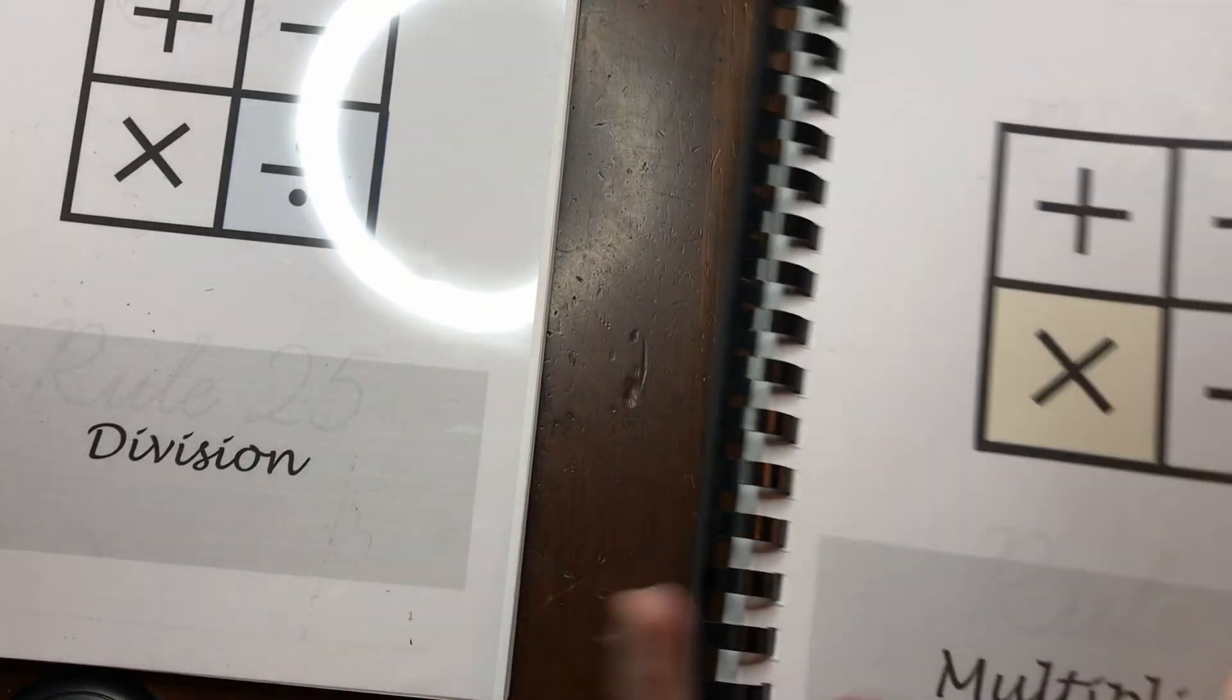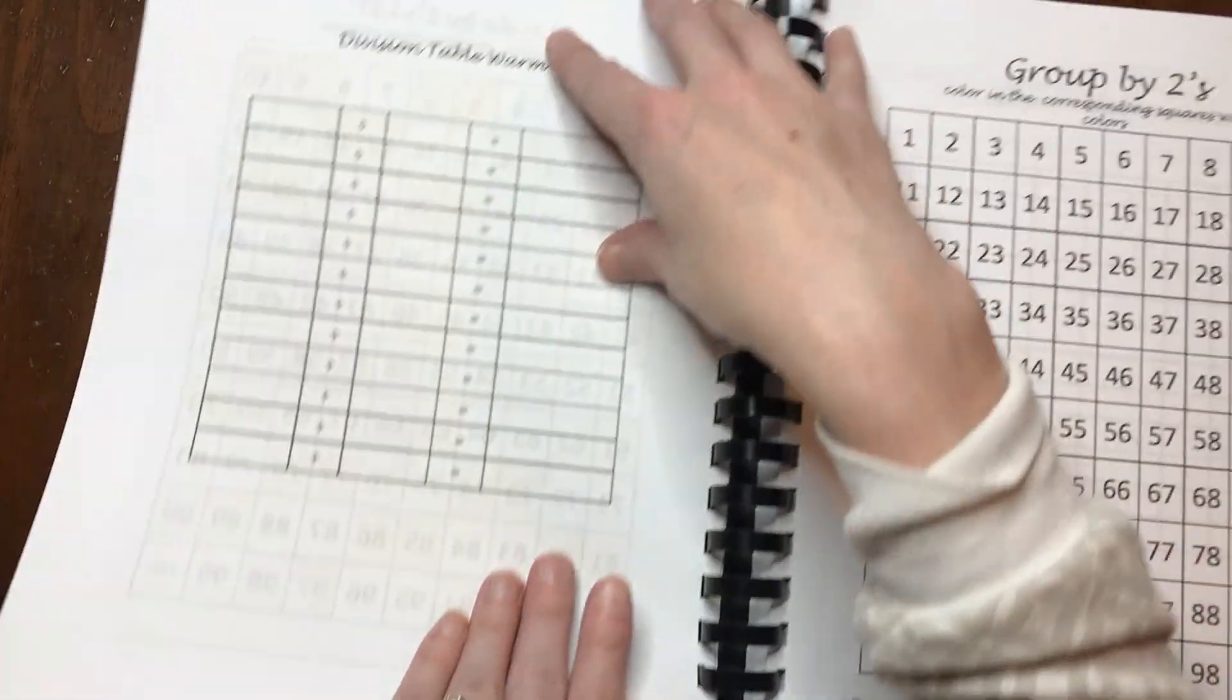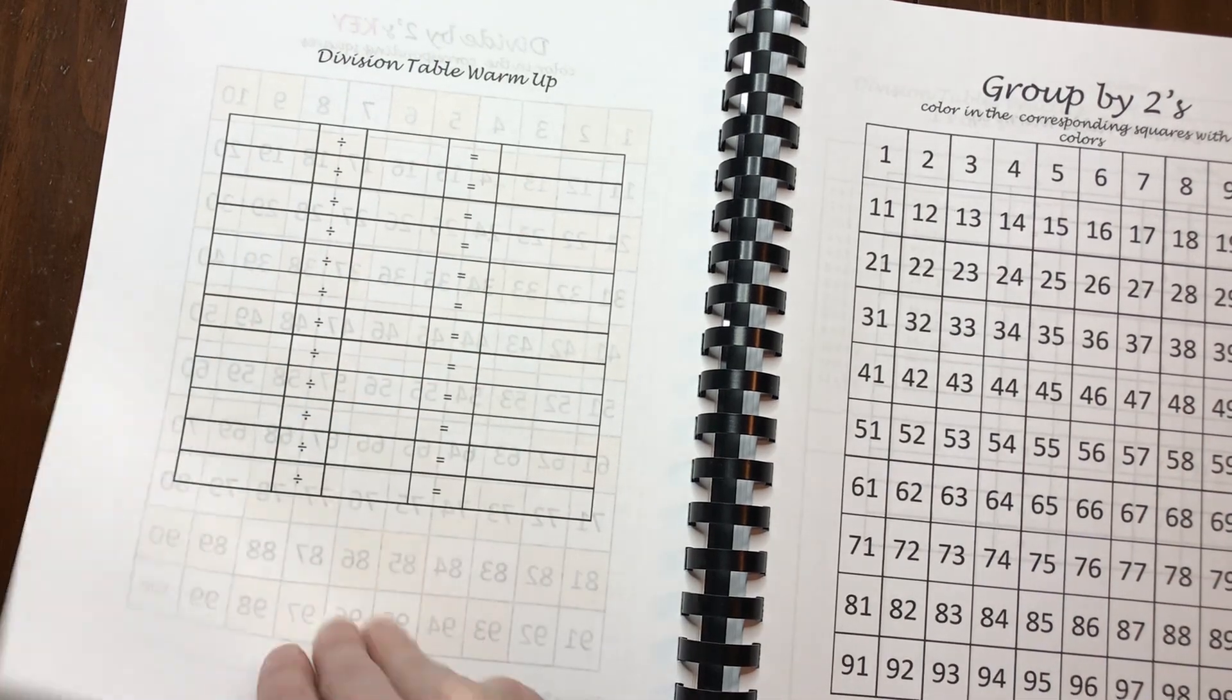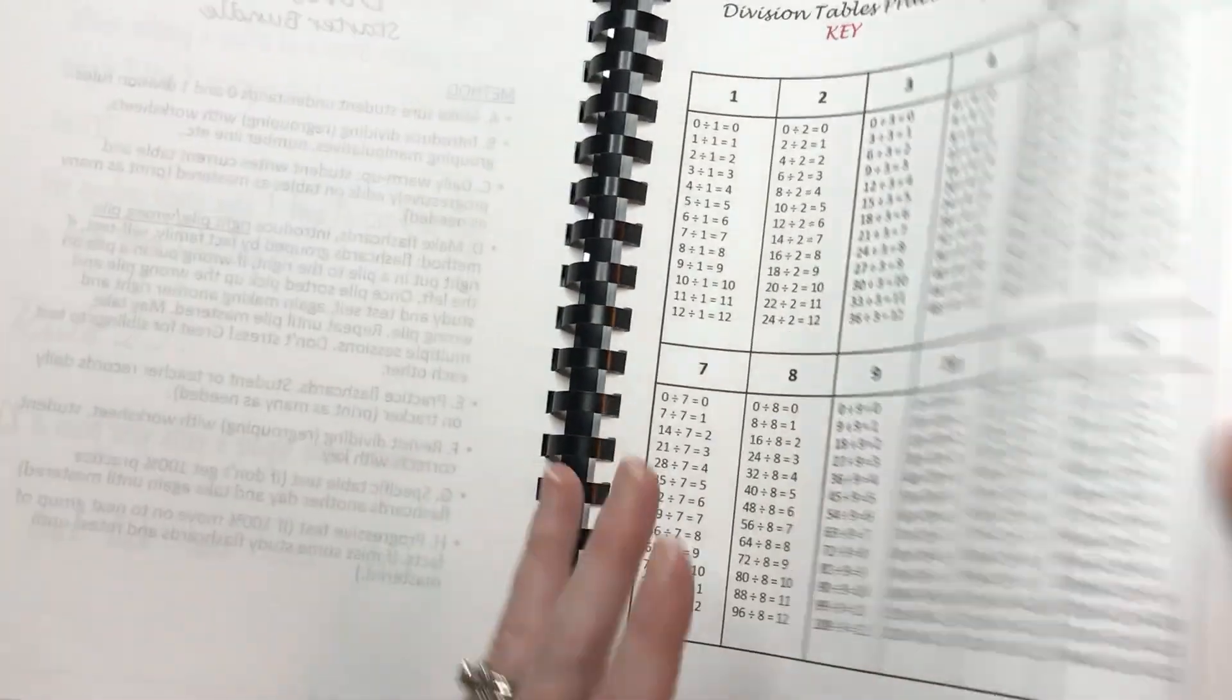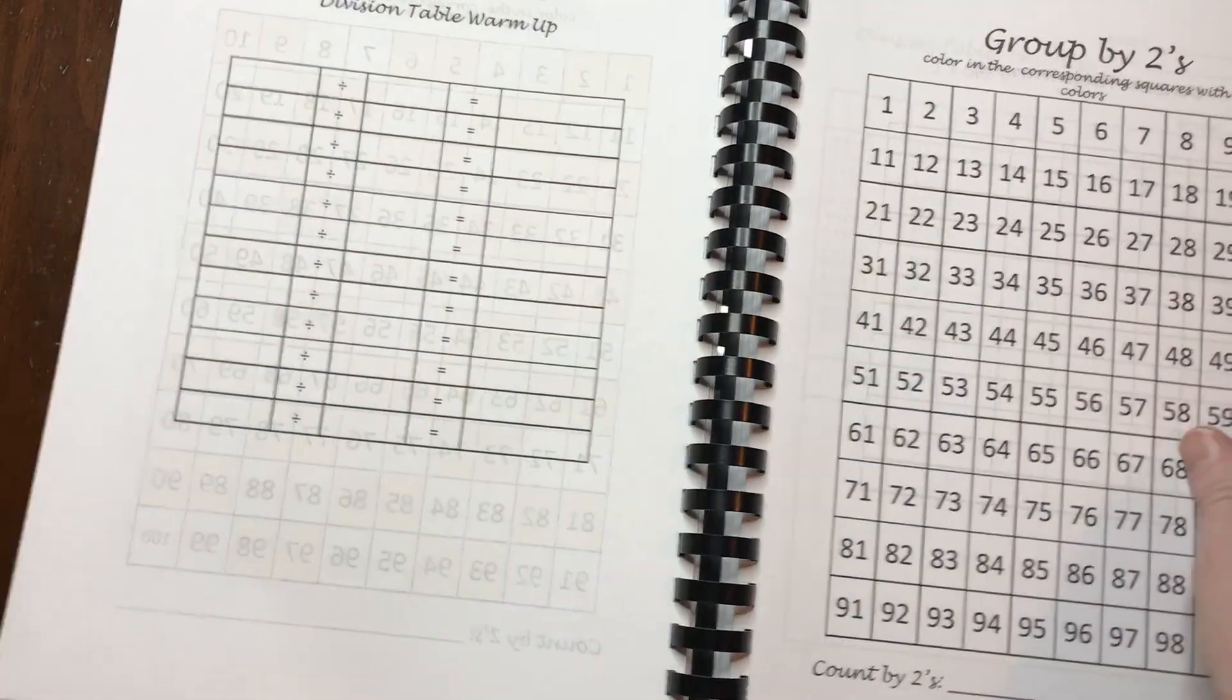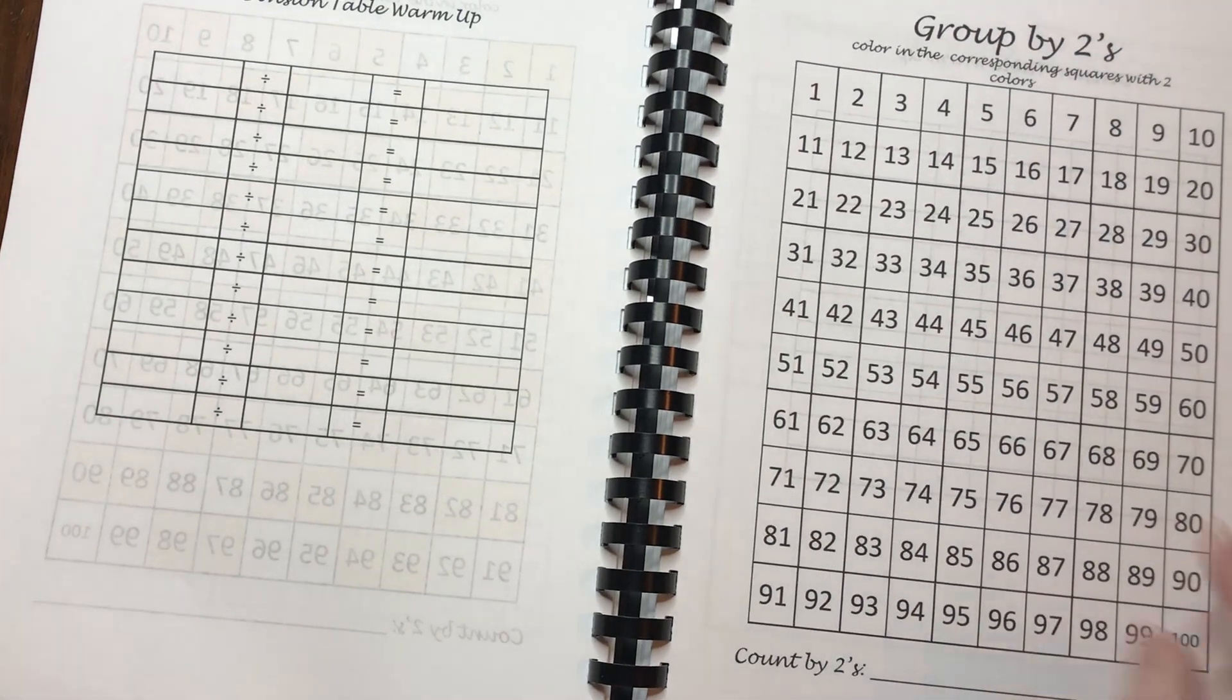That was the warm-up I picked to print on the back side of all of my worksheets. For division, a division warm-up table, this is what I printed on the back side of all my division worksheets. They'll just write it in and I do include because it comes with my workbook there's a division table like the full set so they could look it up if they need to or they could work it out on their abacus.